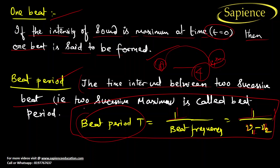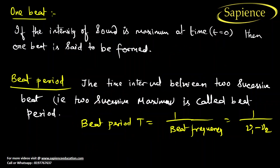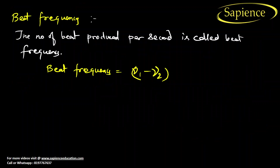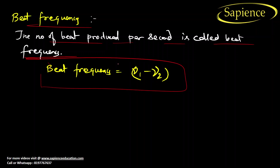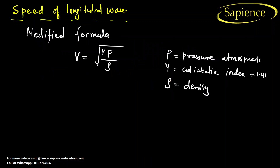Beat frequency is the number of beats produced per second, and it equals the difference of the two frequencies: beat frequency = n₁ − n₂. This formula should be memorized.